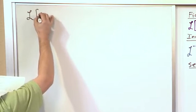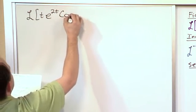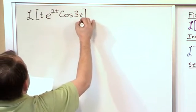We'll have the Laplace Transform of t times e to the 2t times cosine of 3t. That's what we want to find.